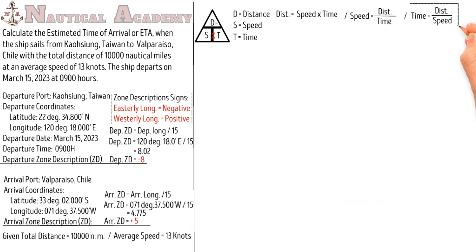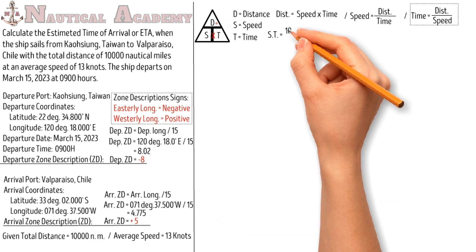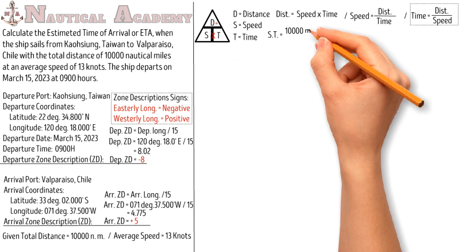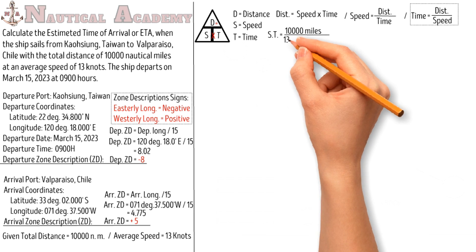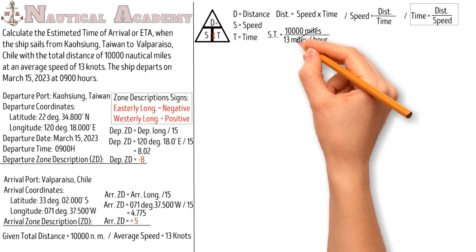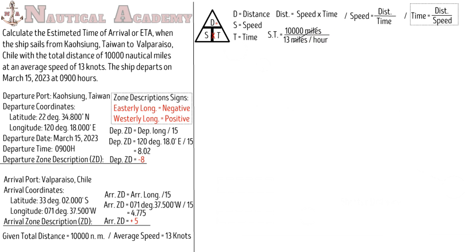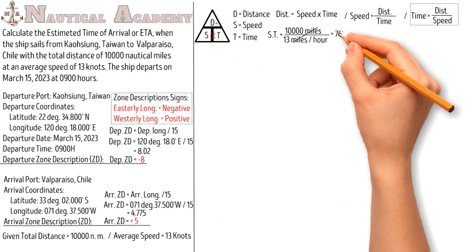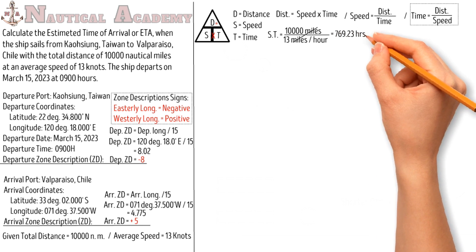We will use this formula to find the steaming time. So steaming time is equal to distance, which is 10,000 miles, divided by speed, which is 13 miles per hour — miles per hour will be the same as knots. We will cancel both the unit miles, so the remaining unit is an hour. The steaming time now is 769.23 hours.